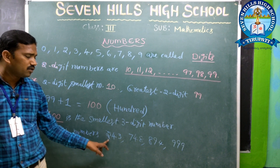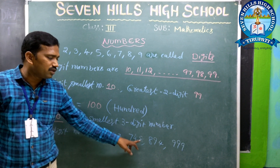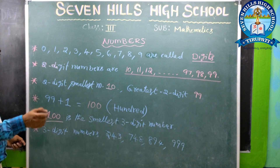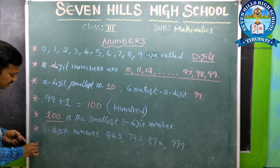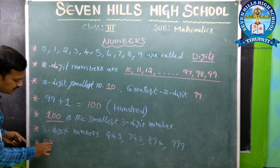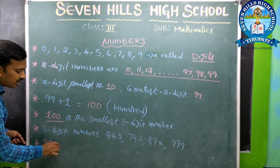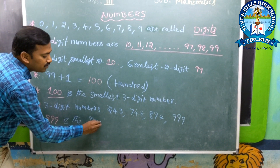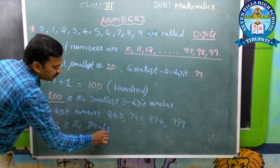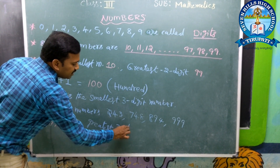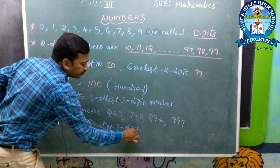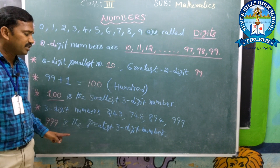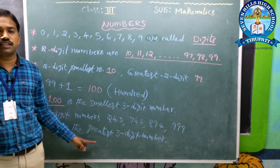3-digit numbers are 243, 748, 894, 999. That number 999 is the greatest — 999 is the greatest 3-digit number.